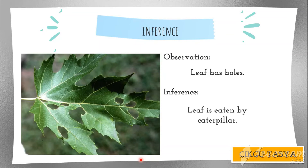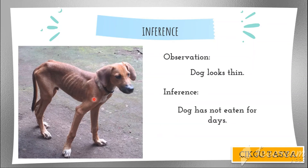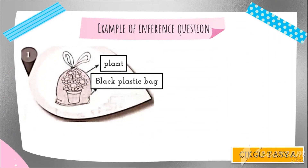Whenever you are answering an inference question, always ask why. Looking at a picture of a dog, the observation is that the dog looks thin. Ask why — to answer the inference question. Maybe the dog has not eaten for days, or maybe the owner did not give it any food. Those are possible answers. Inferences do not have to be right or wrong, but they must be related to your observation.